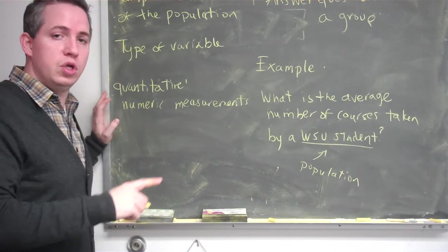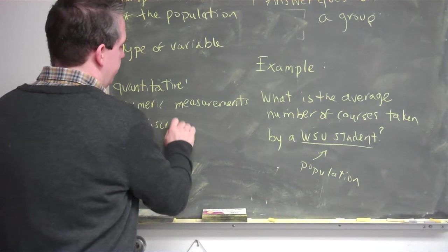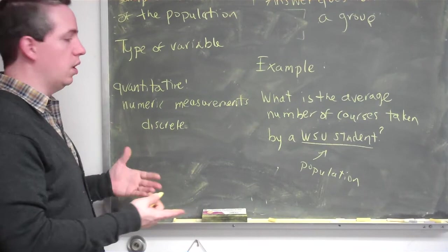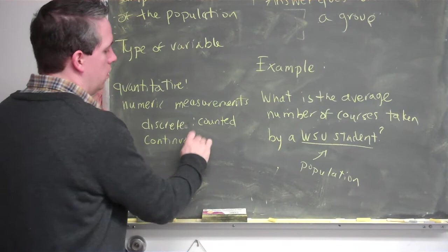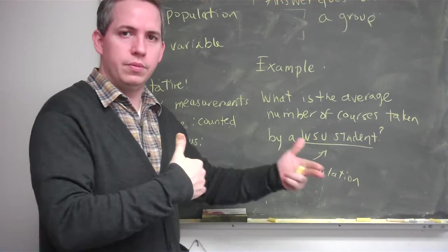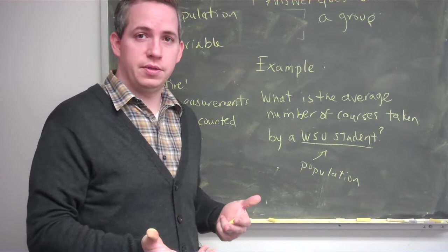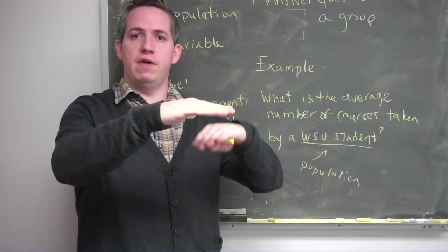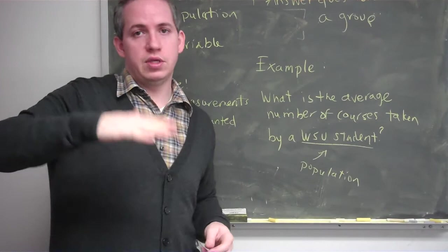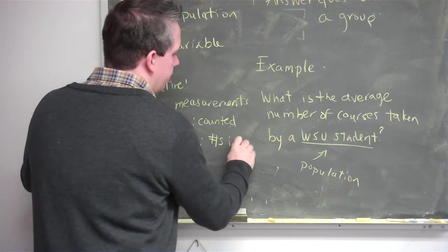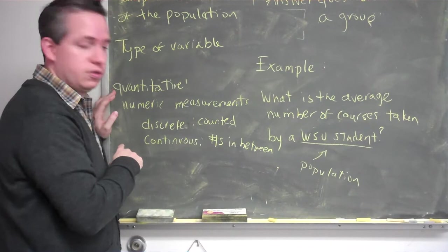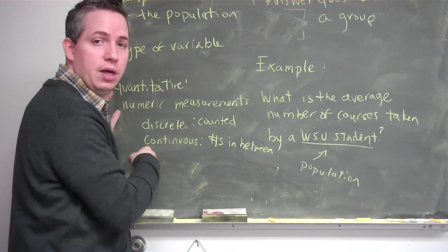Quantitative data is something that we can actually measure — it has some type of numeric measurement to it. Within quantitative data there are two different types: there's discrete, which is a subset of quantitative — something that's just counted — and there's continuous, where between any two numbers there's always another number. For example, height: you could have someone who's five foot nine, five foot ten, five foot nine and a half, five foot nine and three quarters. There's always a third person that could fit right in between, and that's what we call continuous. Counting how many birds you see today is discrete; how tall those birds are or how much time has gone by is continuous.